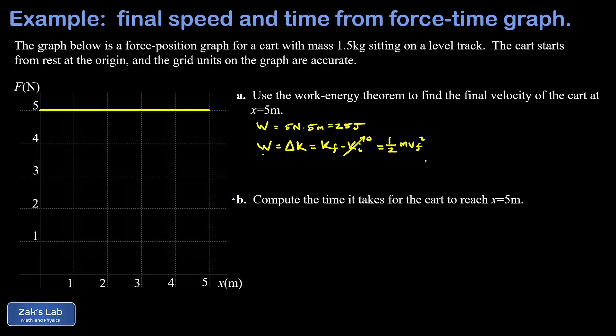So we have the total work pumped into this cart is equal to one half mvf squared. We solve for vf - just multiply both sides by 2, divide by m, and square root the result. And we get the square root of 2w over m.